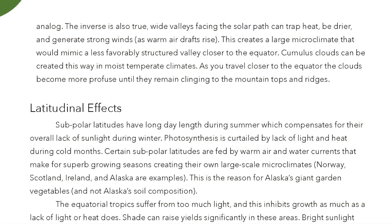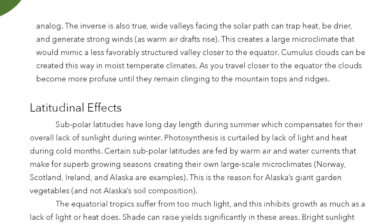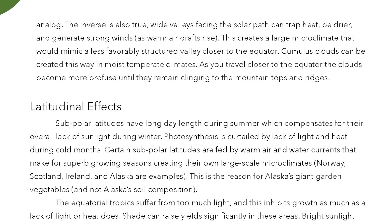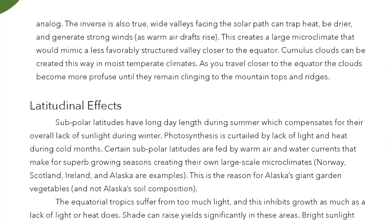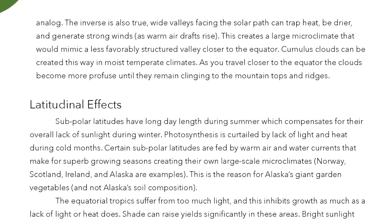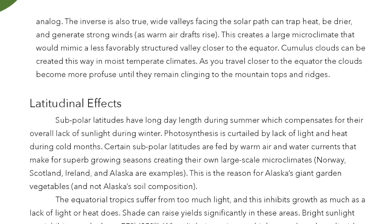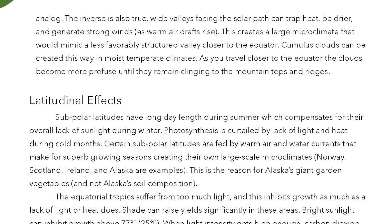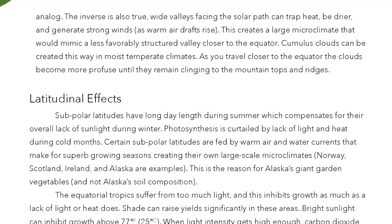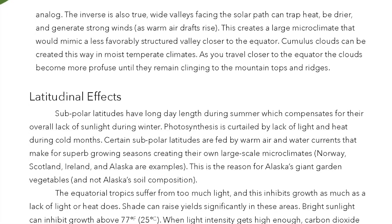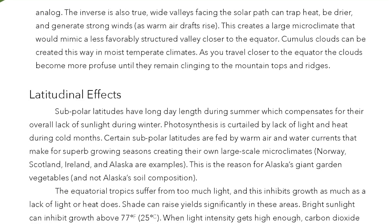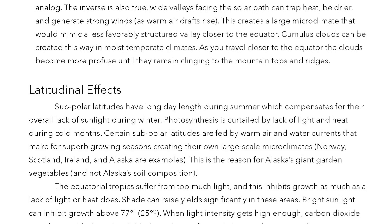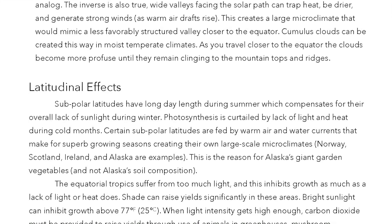The inverse is also true. Wide valleys facing the solar path can trap heat, be drier, and generate strong winds as warm air drafts rise. This creates a large microclimate that would mimic a less favorably structured valley closer to the equator. Cumulus clouds can be created this way in moist temperate climates. As you travel closer to the equator, the clouds become more profuse until they remain clinging to the mountain tops and ridges.